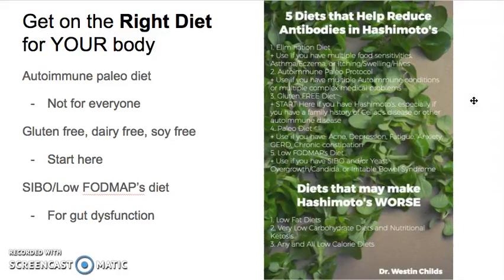Number one is the AIP diet, or autoimmune paleo diet. It really isn't for everybody — it's a pretty restrictive diet and can make following it long-term pretty difficult. However, I do recommend it if you've tried less restrictive diets and failed, or if you have a history of multiple autoimmune diseases.